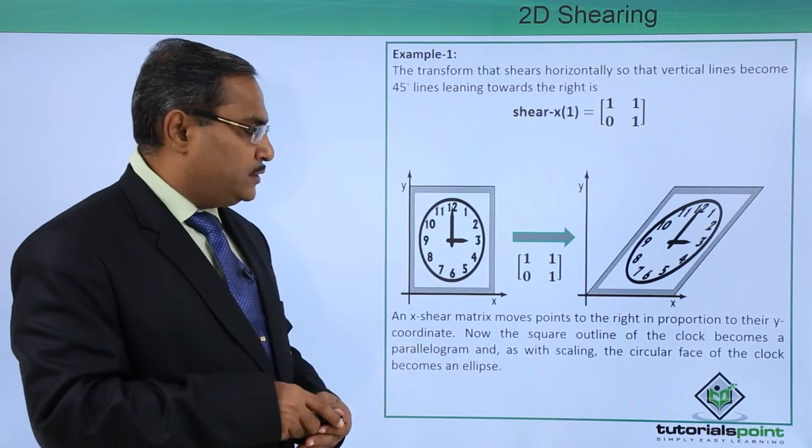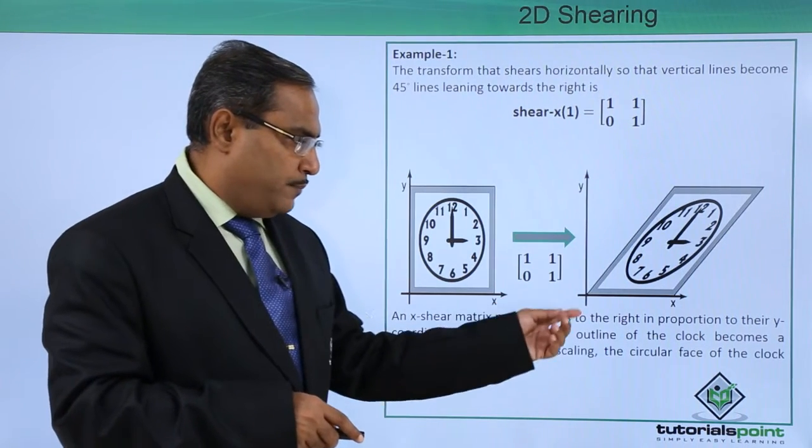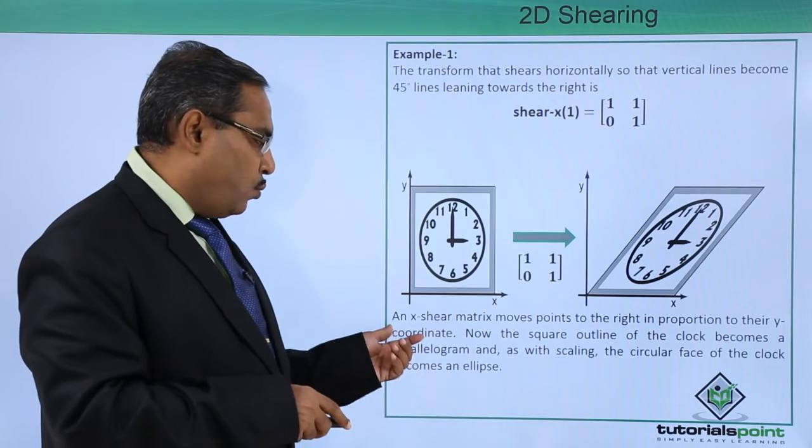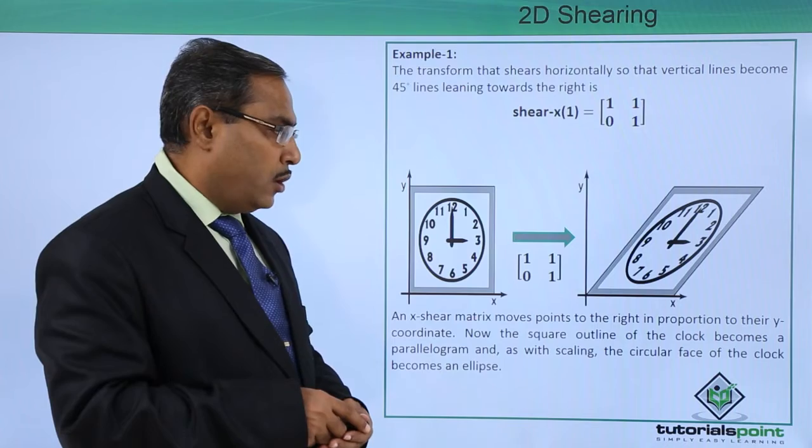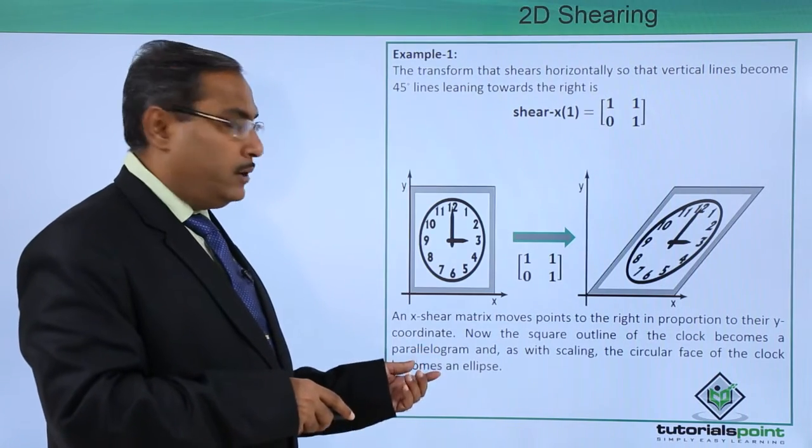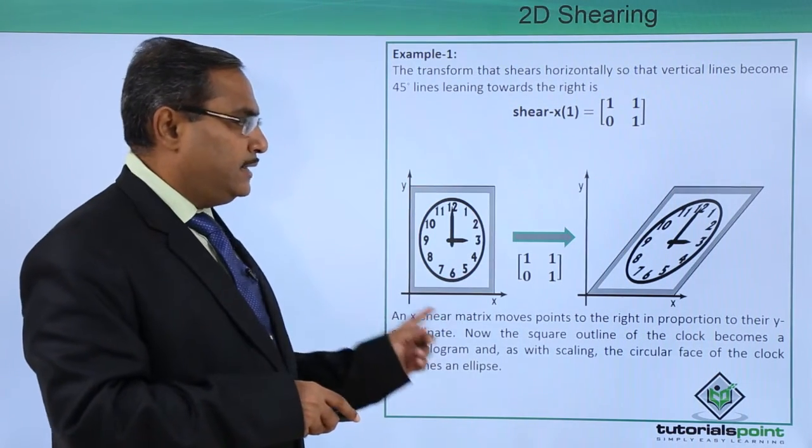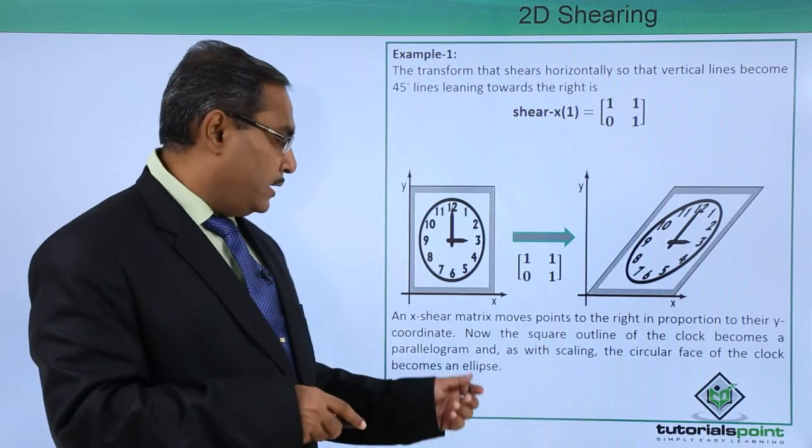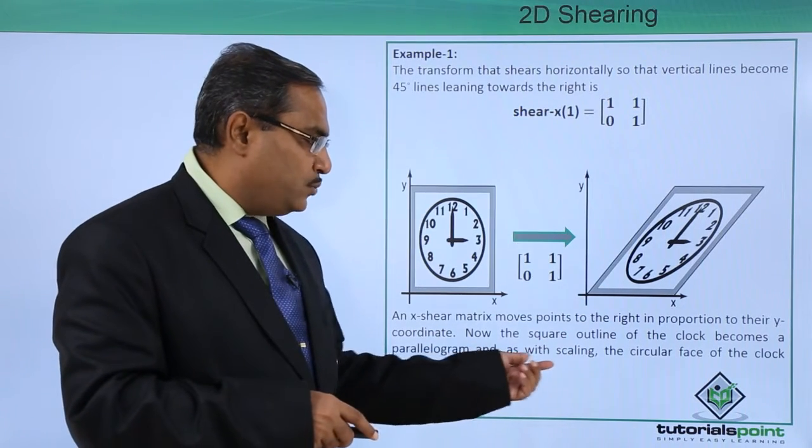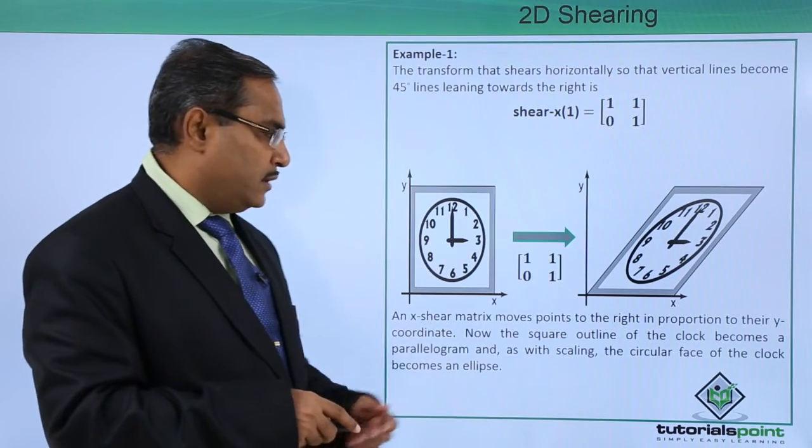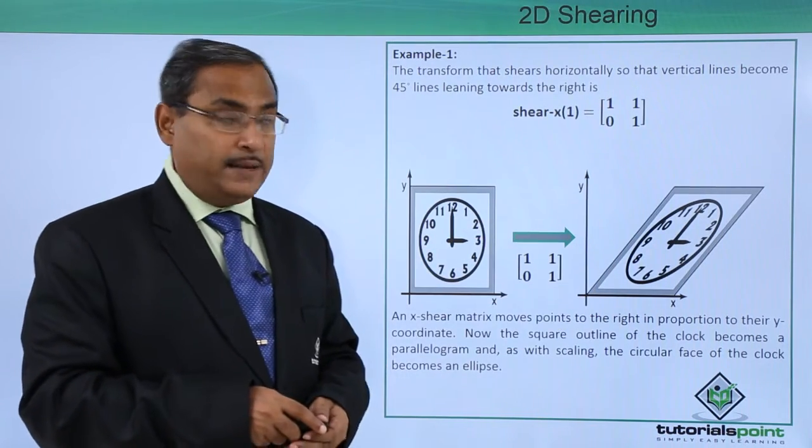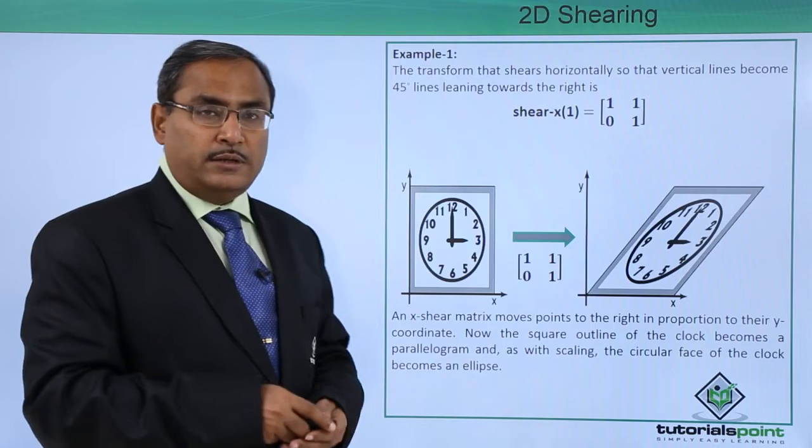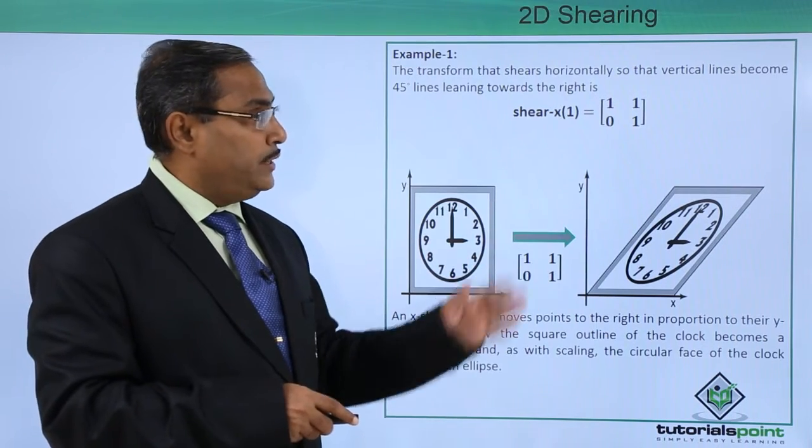An x-shear matrix moves points to the right in proportion to their square y coordinates. And now the square outline of the clock becomes a parallelogram. At first it is something like this, now it has become a parallelogram. And as with scaling, the circular face of the clock becomes an ellipse. It has become an ellipse. That is our whenever doing the shearing along the x-axis.